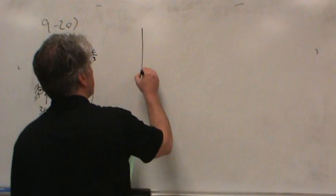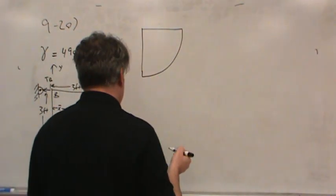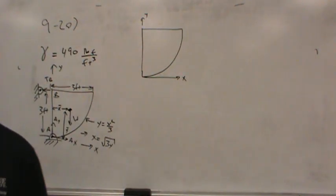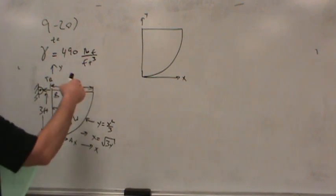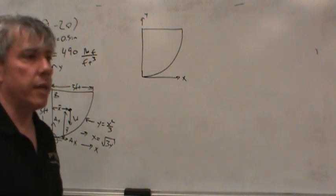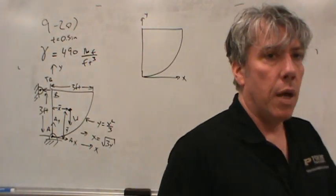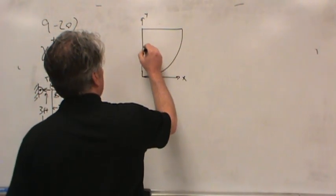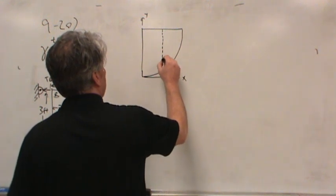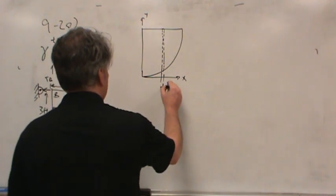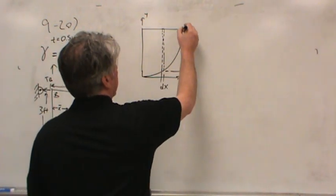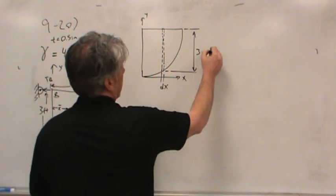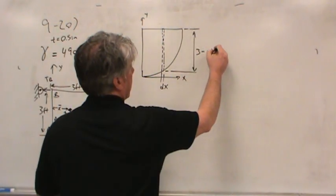The strategy is always the same in these problems — it doesn't matter if you're talking about a line, an area, or a volume. Don't forget the thickness of this plate, which goes into the page, is one-half an inch. The strategy is to balance each individual part of the shape with the entire shape. I might look at a little sliver of area with width dx. Its height would be 3 minus y, because the overall height from the x-axis is 3 feet, so this height is 3 feet minus y, where y is a function of x.